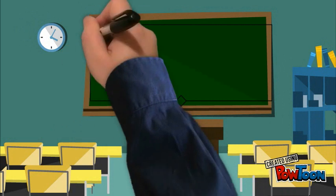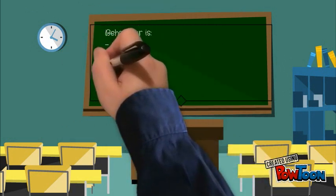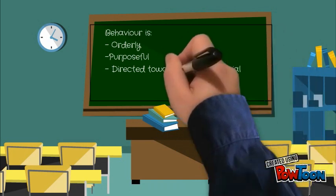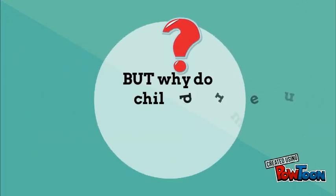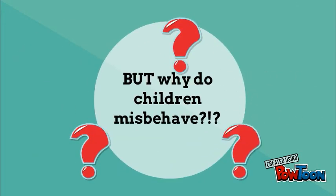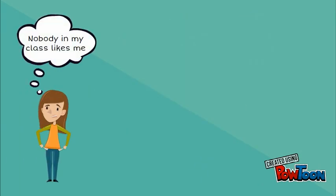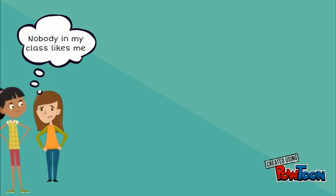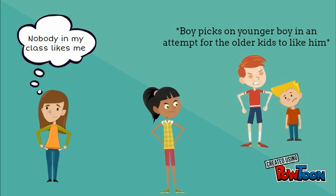Thus, all behavior, including misbehavior, is orderly, purposeful, and directed towards receiving social approval. But why do children misbehave? Misbehavior is the result of not being accepted. All misbehavior is the result of a child's mistaken assumption about how to belong and gain status.